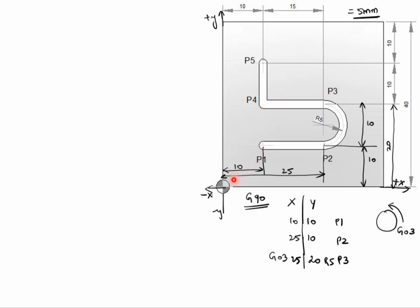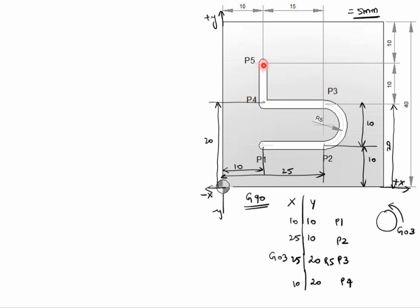This comes to the other side. X value is 10 plus 10 equals 20 for P4. Y value is 20 — so X is 10, Y is 20 for P4. Next we see P5. Up to here is 20 plus 10 equals 30 for the Y value, so Y is plus 30 and X is 10 for P5.